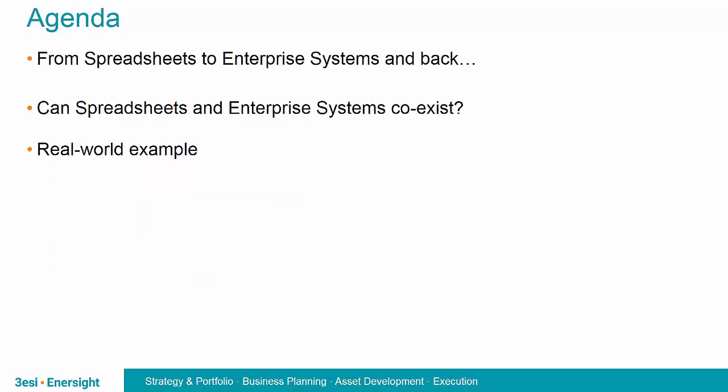Through the agenda today, we're going to be covering a few different topics. Excel and other spreadsheets — essentially the build-it-yourself approach — were the first systems adopted by companies to solve those problems. We'll take a quick overview of those systems. But then enterprise systems began to appear, and we'll discuss what were the drivers for bringing these systems in. With that, we'll be looking at both the pros and the cons of spreadsheets and enterprise systems. Given that industry, in some respects, gravitates back to Excel, could we potentially have both? And why would we want both? What does this really give the end user? Finally, we'll be looking at a real example approach to solving this problem. The goal here is to embrace, not replace.